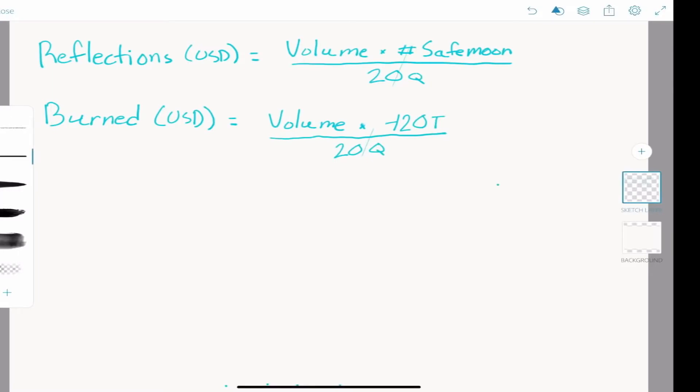This is nice, but remember this answer is in USD, which we don't care about when evaluating the burn wallet. We only care about how many SafeMoon are burned specifically, so we need to divide this answer by the price of SafeMoon or squeeze the price into the denominator.